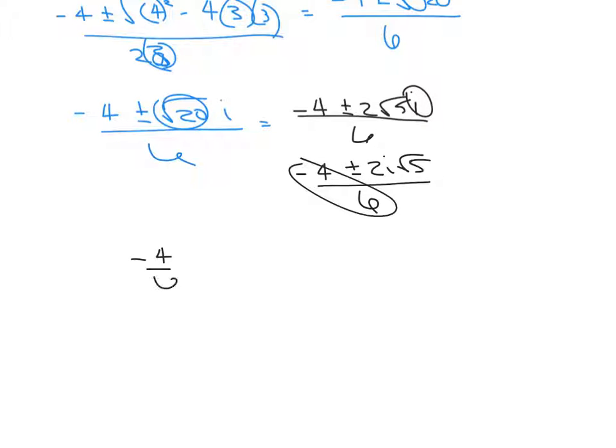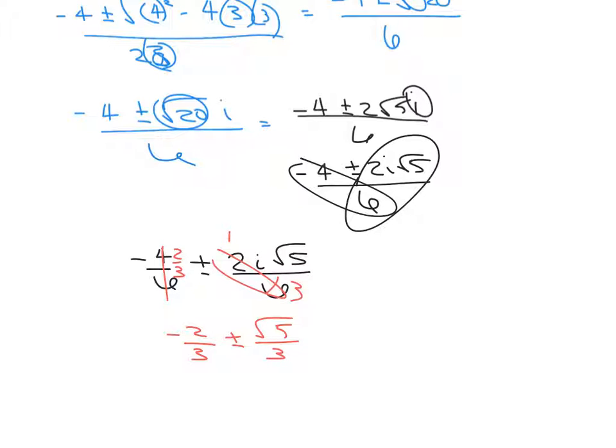And then what we're going to do is split these up. So negative 4 over 6 plus or minus 2i square root of 5 over 6, and then we can start reducing. So that can change to 2 thirds, and that can change to 1 third, so that gives me negative 2 thirds plus or minus square root of 5 over 3i. Keep that i there, and we'll put it right there at the end.